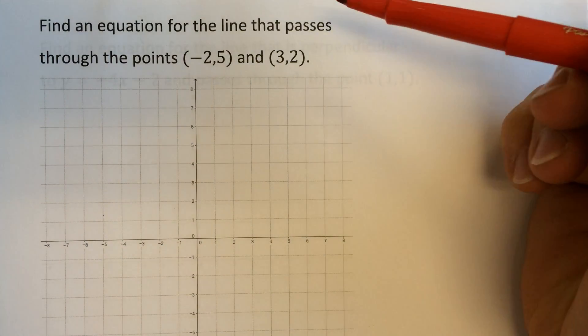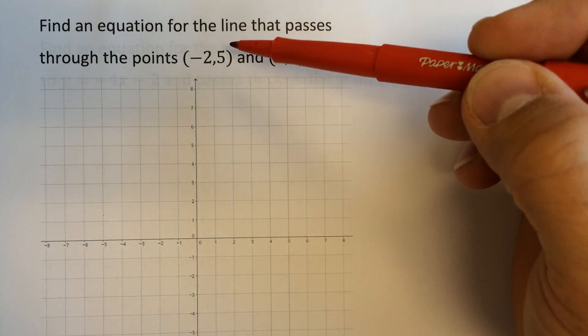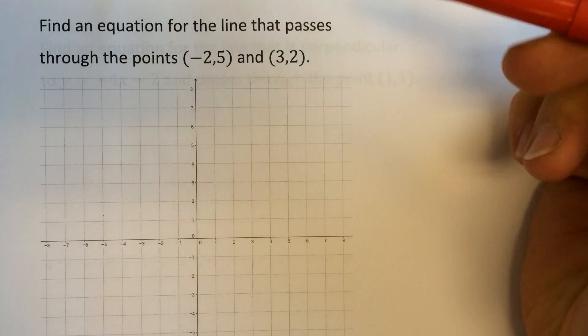Hi, I'm Brandon Grizzly. I'm a high school math teacher. Let's find an equation for the line that passes through these points, negative 2, 5 and 3, 2.